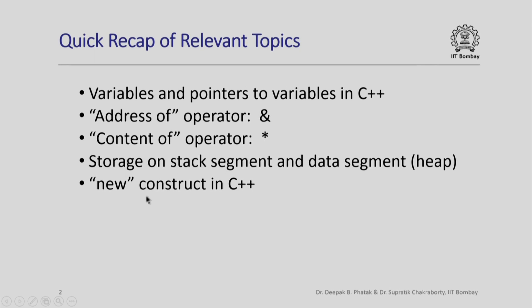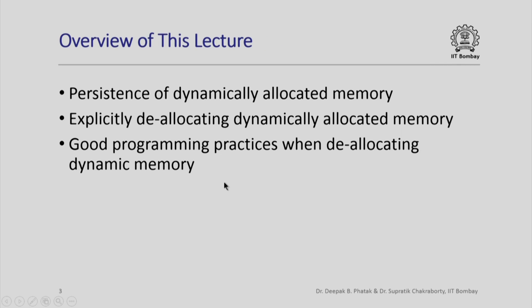Specifically, in the last lecture, we looked at the new construct in C++ which allows us to dynamically allocate memory in the data segment or heap. In this lecture, we are going to see how dynamically allocated memory persists across function calls, and therefore we will need to explicitly deallocate dynamically allocated memory. We will also look at some good programming practices when deallocating dynamically allocated memory.